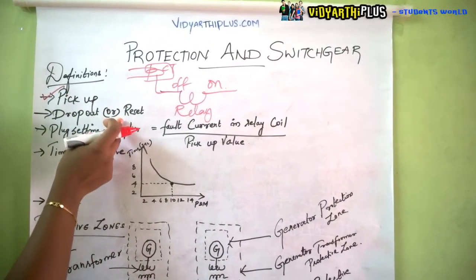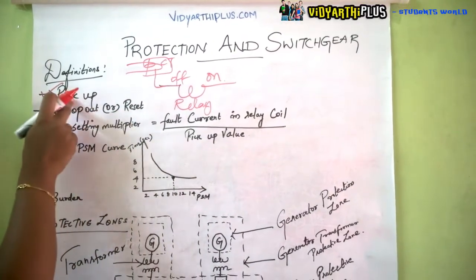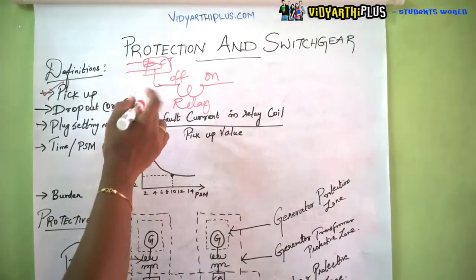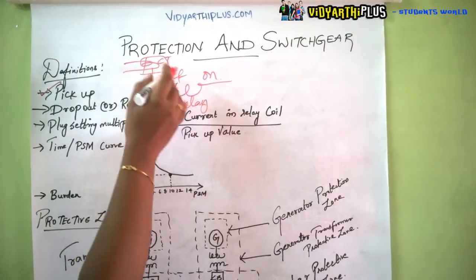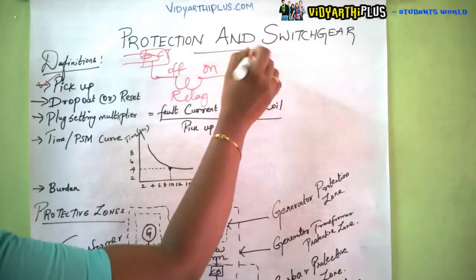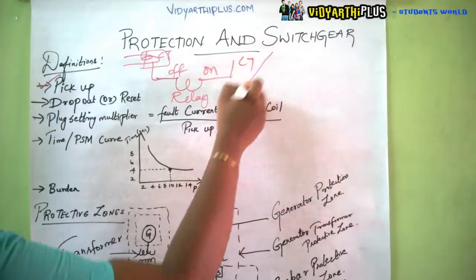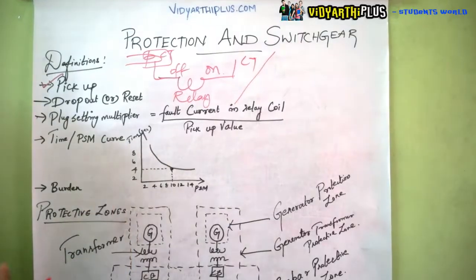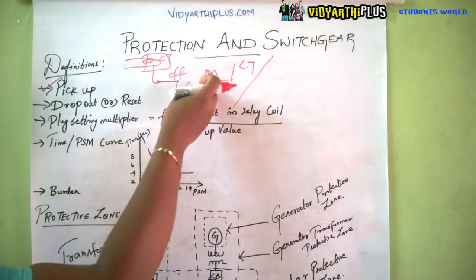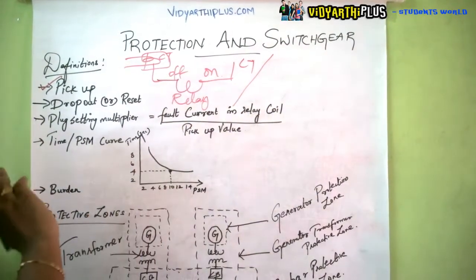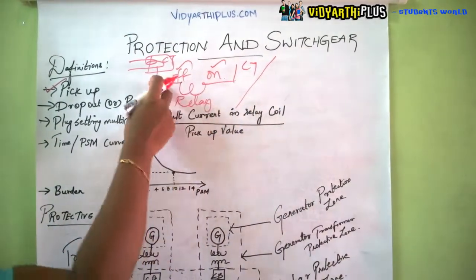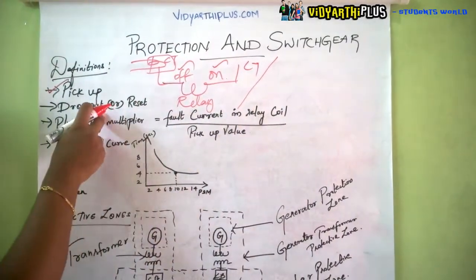Reset is the opposite of pick up. When a fault occurs, the relay goes from off to on position, the circuit breaker operates, and the faulty part is isolated from the healthy part. The relay then returns from on to off position — that is called a reset.